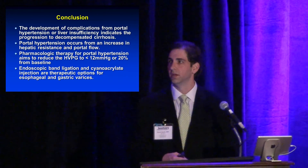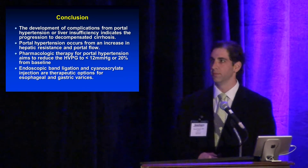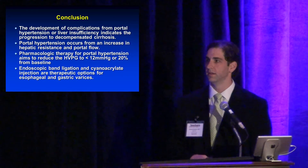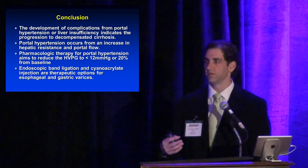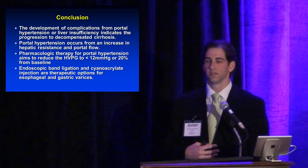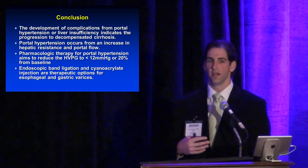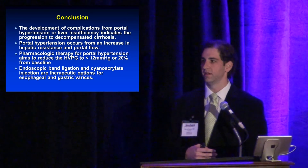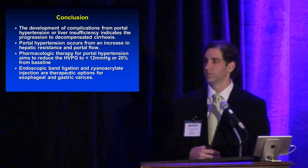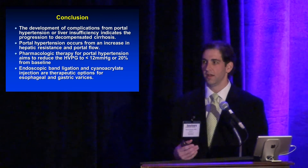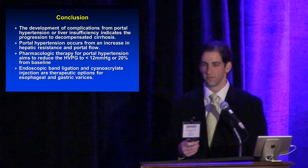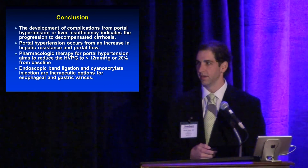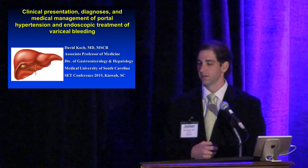In conclusion: development of complications from portal hypertension or liver insufficiency indicates progression to decompensated cirrhosis. Portal hypertension occurs from increased resistance and increased portal flow. Pharmacologic therapies aim to reduce portal hypertension with a target HVPG of less than 12 mmHg or at least a 20 percent reduction from baseline. Endoscopically, band ligation is superior to sclerotherapy, and we now have options to treat gastric varices in addition to esophageal ones, complementing advanced interventional treatments such as TIPS.